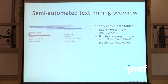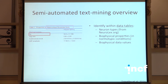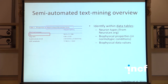I also need to identify which biophysical property was being measured. In this case, the scientist uses the term R subscript N, which corresponds to input resistance. I have algorithms that look for terms like that. Once you identify both the neuron type and the property, you extract the biophysical data value — in this case, the authors report a mean and a standard error. This is all done using text mining algorithms.